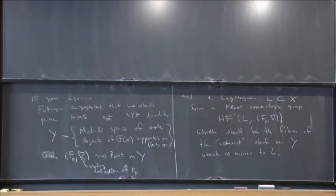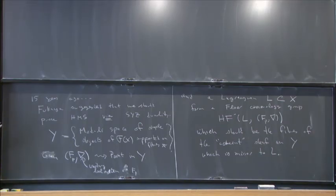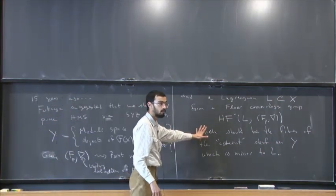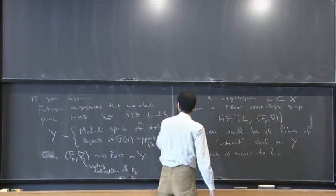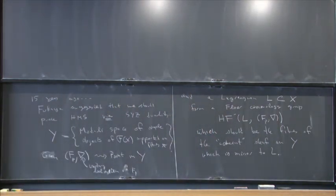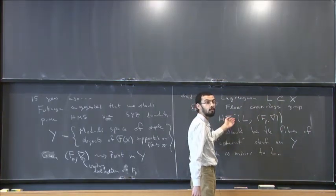Homological mirror symmetry tells you that to a Lagrangian you should be able to assign a coherent sheaf — up to ignoring the derived category issue. So there should be a functor from here to here. The suggestion is that this assignment is essentially tautological if you can check the right things. You take a Lagrangian; the coherent sheaf, if you want to think of it, is just a family of vector spaces varying in some controlled way over Y, and the family of vector spaces is just going to be these Floer cohomology groups.